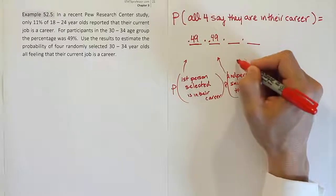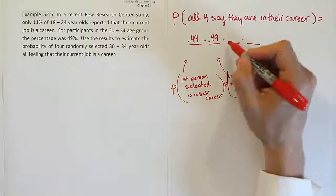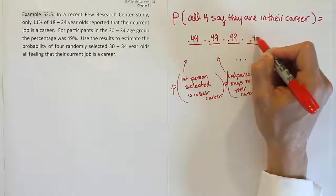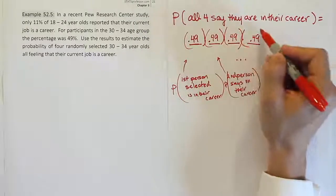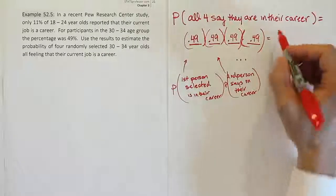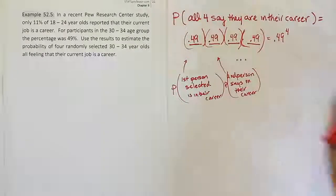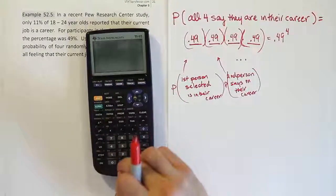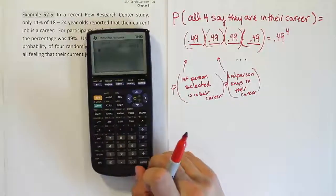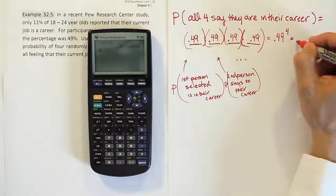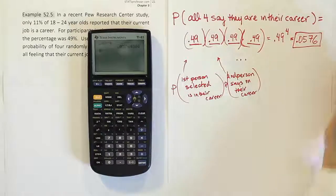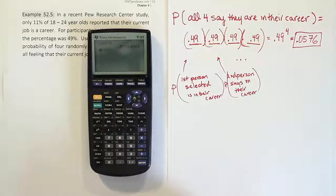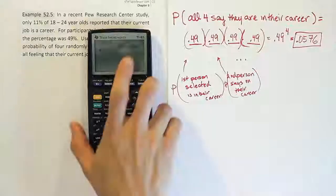I could keep writing out these little probability statements but you have the idea. They're going to each be 49% or 0.49 as a decimal. Then we will multiply them all together. So the final answer is 0.49 to the 4th power and that turns out to be 0.0576. So 5.76% or almost 6%. Not a high probability that all four of them say they're in their career already.